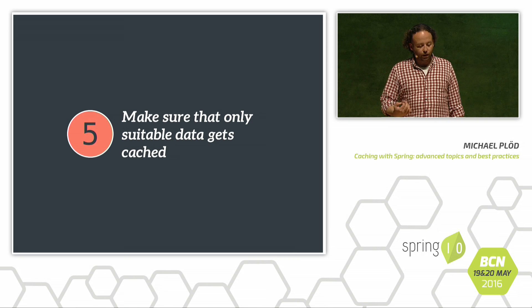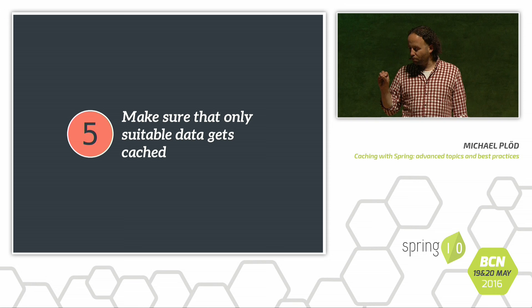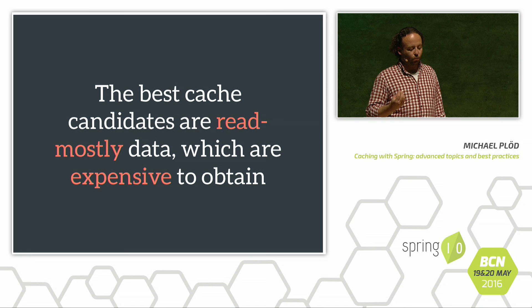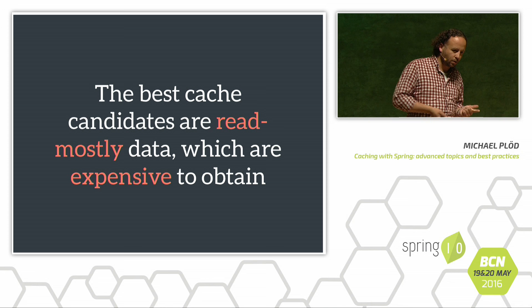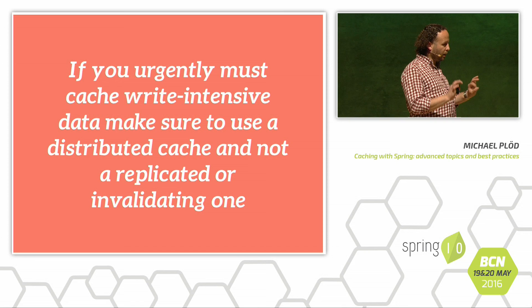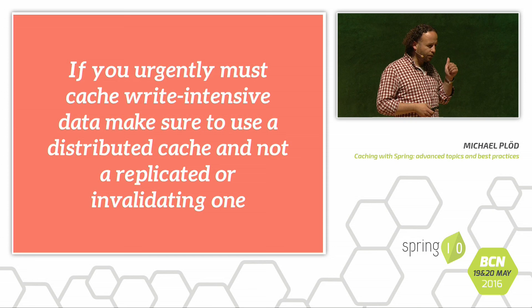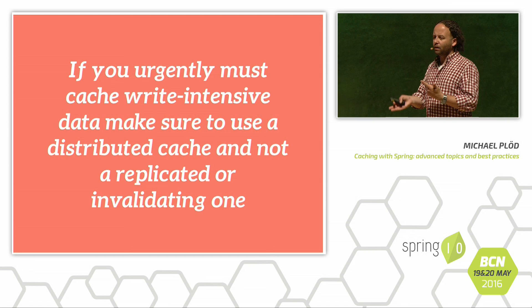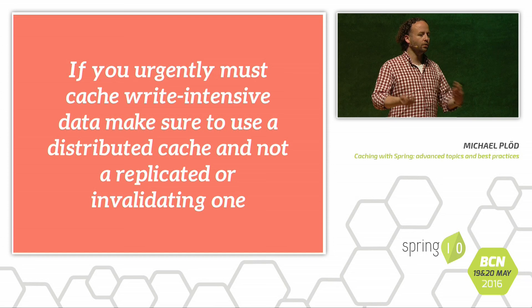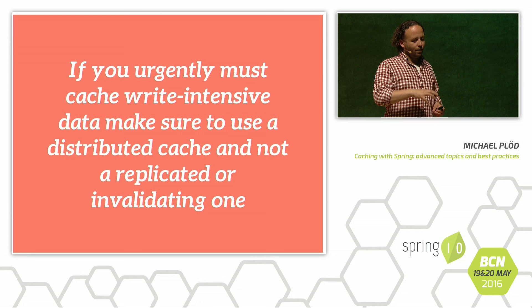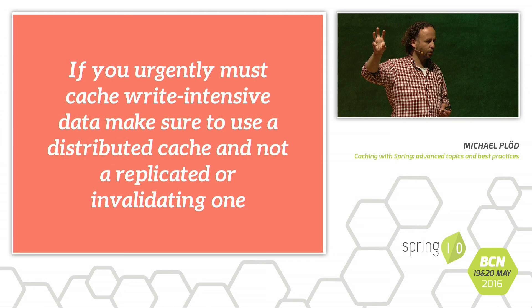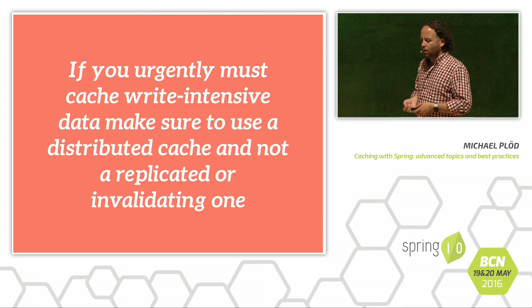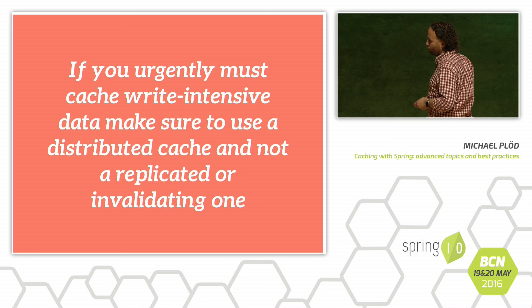The next question is: which data should I cache? Usually — and this is also about non-functional requirements — make sure the data you cache is suitable. We want read-mostly data: data that gets read often and written not so often. If you must cache write-intensive data, the distributed cache plays out its strengths. Replication will add a lot of network overhead, and invalidation will make the cache ineffective by always shooting away data on other nodes. Distribution reduces network traffic since we only replicate to one other node as backup, and we can do those backups asynchronously.